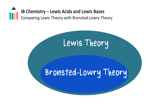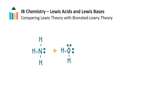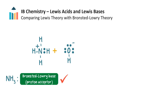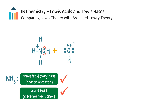Sometimes a species can act as both a Bronsted-Lowry acid or base and a Lewis acid or base. Here is an example: ammonia reacting with water. In this reaction, a proton is transferred from water to ammonia, leaving behind a hydroxide ion. Since ammonia accepts the proton, it is a Bronsted-Lowry base. At the same time, because ammonia bonds to the proton by sharing its lone pair of electrons, ammonia also acts as a Lewis base.